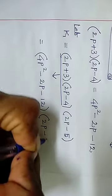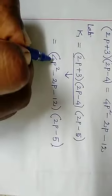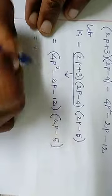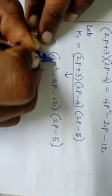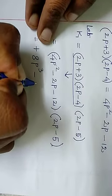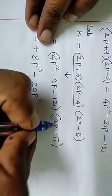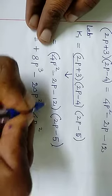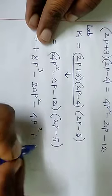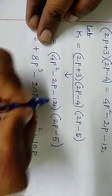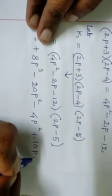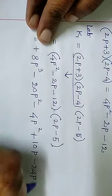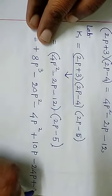Now we have 3 terms to multiply. First: plus into plus is plus - 4 times 2 is 8, p square into p is p cube. Second: plus into minus gives minus 4p, plus 20p squared. Minus into plus gives minus, 2 times 2 is 4, p into p is p squared. Minus into minus gives plus: 2p, plus 10p. This is the third. Minus into plus gives minus 12, minus 24p. Minus into minus gives plus: 12 times 5 is 60.